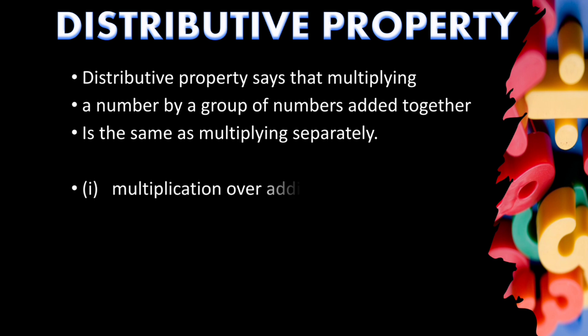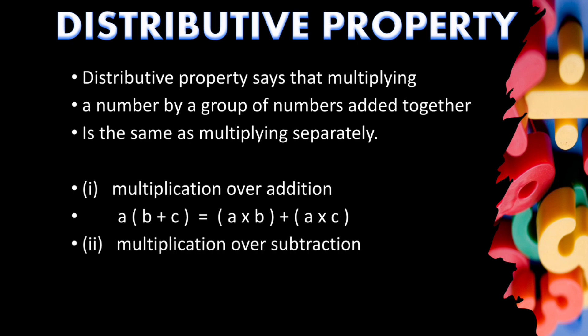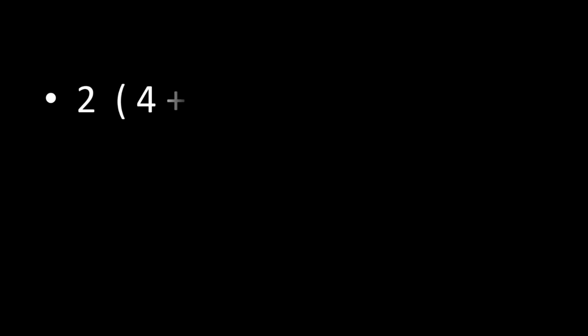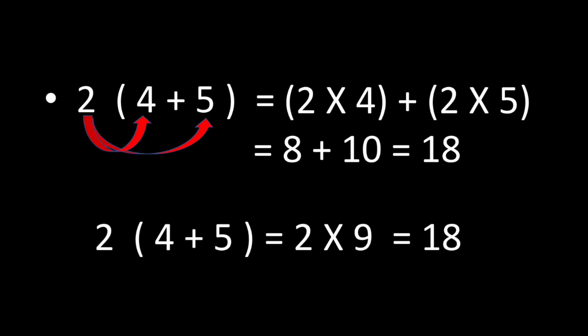Distributive property is of two types: first is multiplication over addition, and second is multiplication over subtraction. Here, when 4 and 5 are added together and the sum is multiplied, 2 will be multiplied with each term inside the bracket. So 2 is multiplied with 4, then with 5, and both products are added together. Here, 2×4 plus 2×5 equals the same result as 2×(4+5) = 2×9 = 18. Both sides are equal.